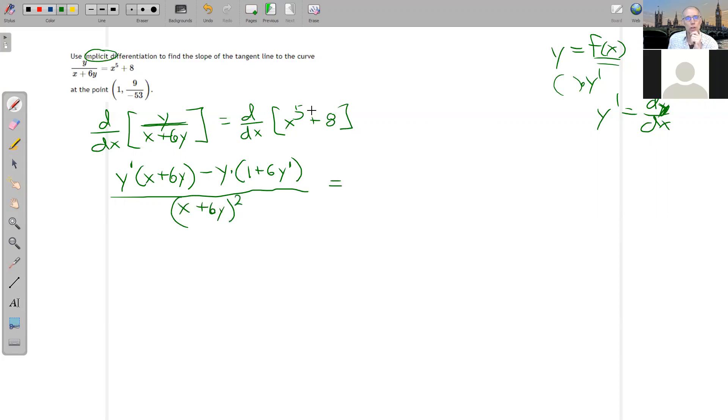Other side is pretty straightforward. The derivative of X to the fifth is 5X to the fourth. And the derivative of 8 is 0. So I'm not even going to write that. So then from here, we could solve for Y prime in general and get a function of X and Y for any point, or we could just plug in this X and Y value and then solve for Y prime. So I'm going to take that's the easier route usually.